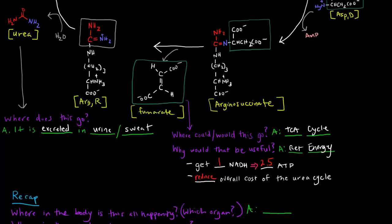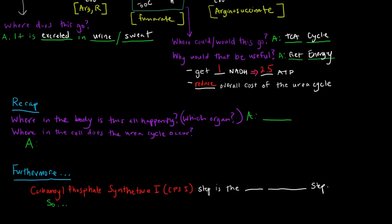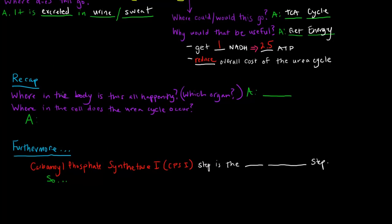As a sort of general recap and overview, where in the body is all of this happening? Which organ? It's happening in the liver. But where in the cell specifically does the urea cycle occur? Well, some steps occur in the mitochondrial matrix, and the rest of it occurs in the cytosol.